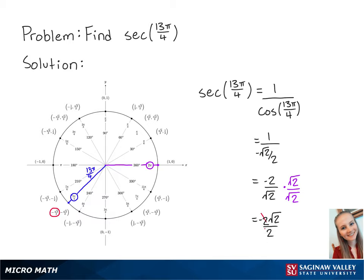Since there's a 2 on the top and the bottom, these will cancel out, and we are left with negative square root of 2. And this is the final answer.